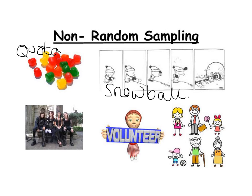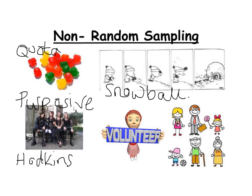The next type is purposive sampling, a technique used by sociologists who are looking for particular people. For example, Hodkinson wanted to research goths, so he went and found some goths and did research on them — just going and asking people to find the sample that was going to give him the data he wanted to collect. This can be used where a specific type of person is required.